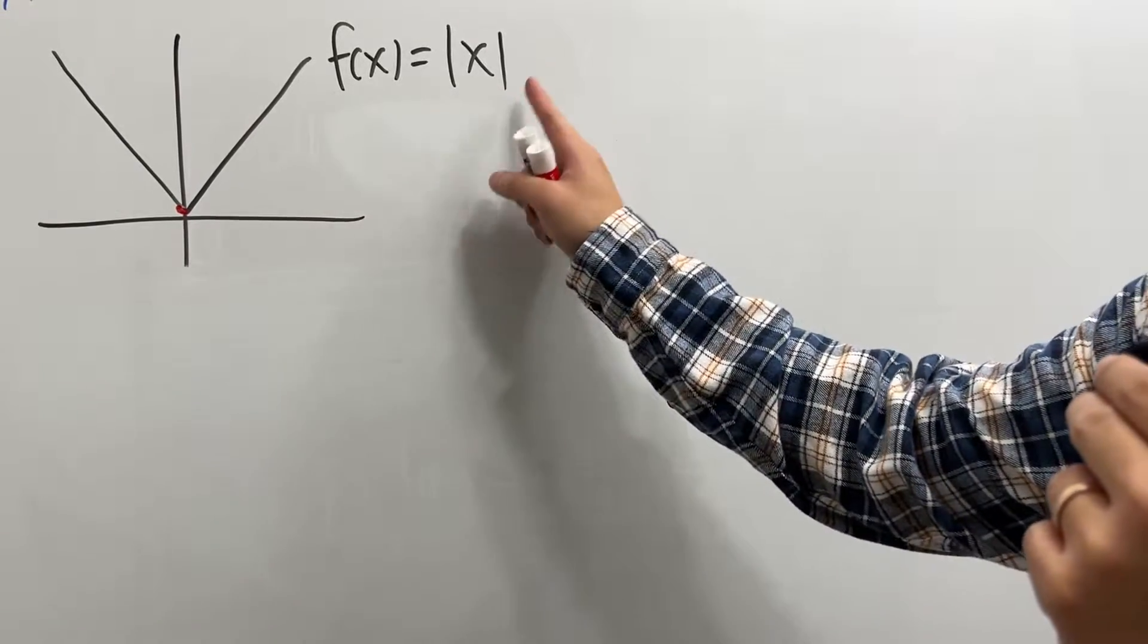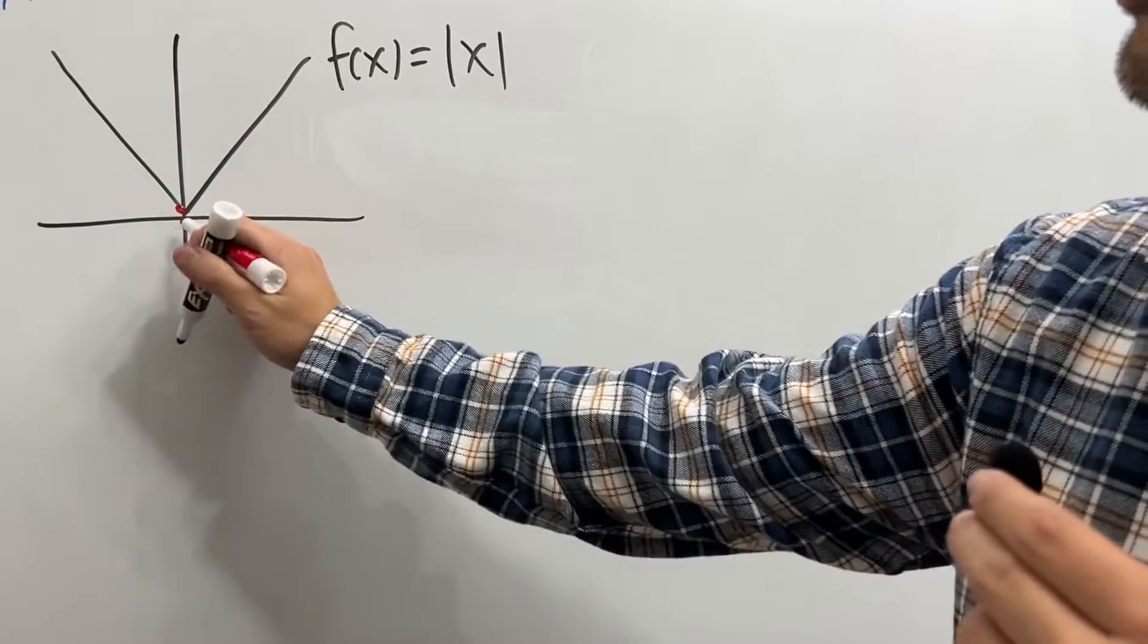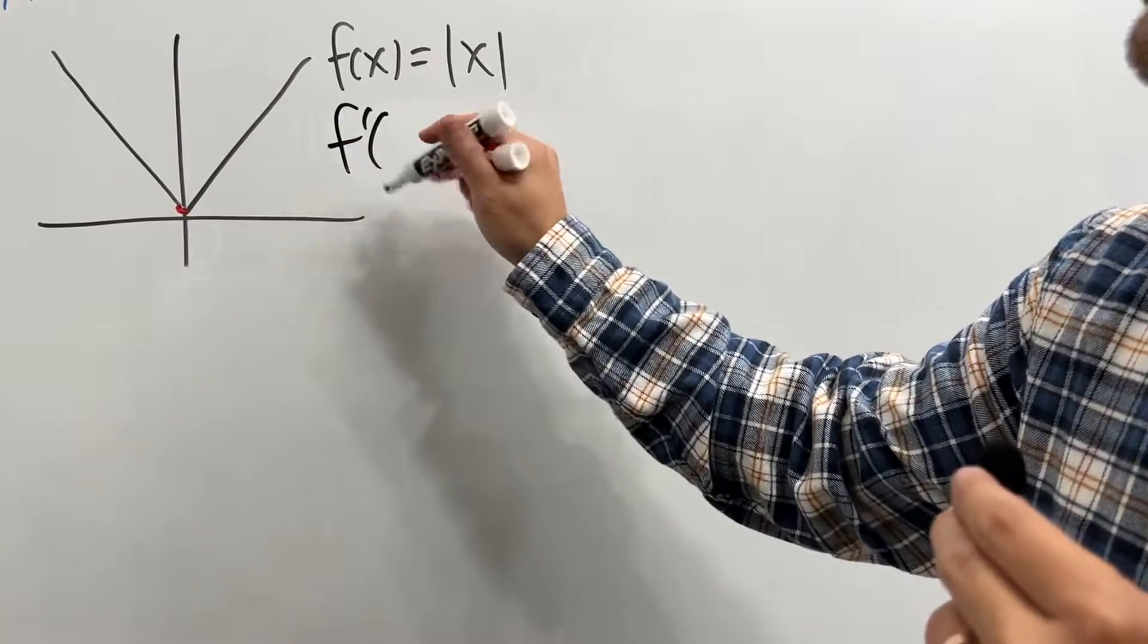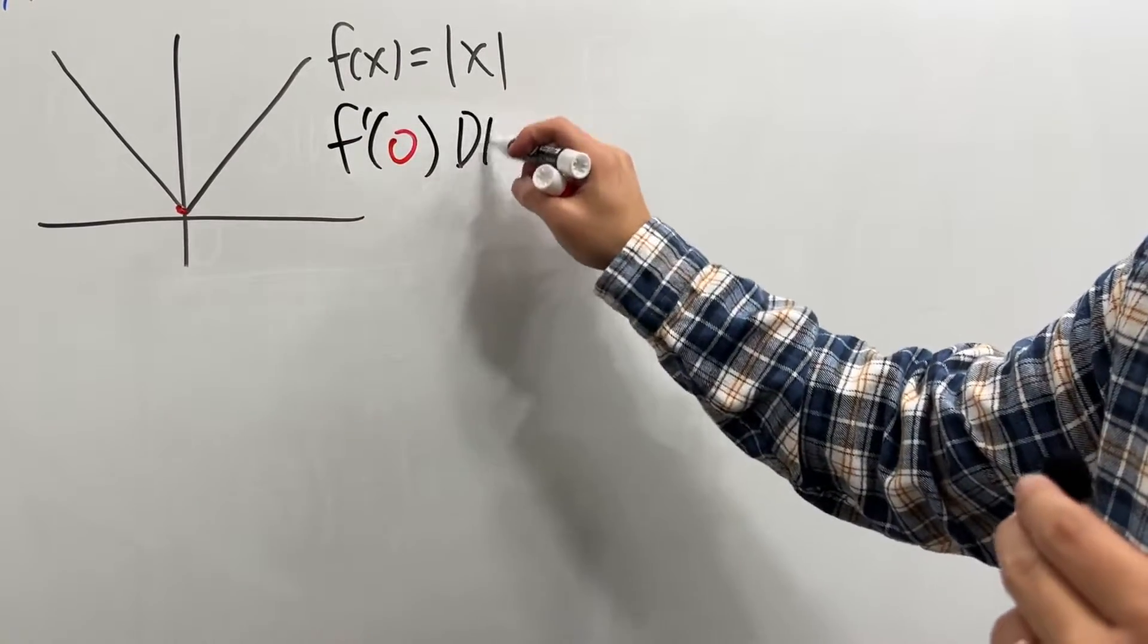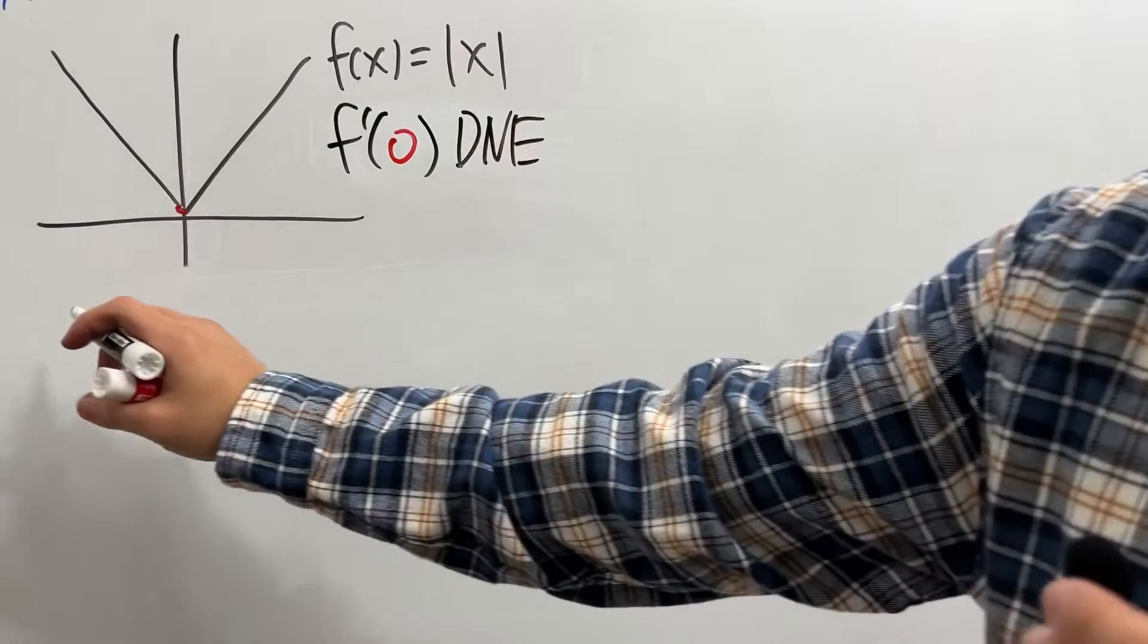We know when we have the absolute value of x, this right here is not differentiable at 0, so we write f'(0) doesn't exist. But don't give up, because today let's talk about the symmetric derivative.